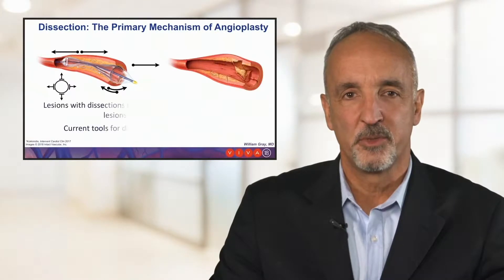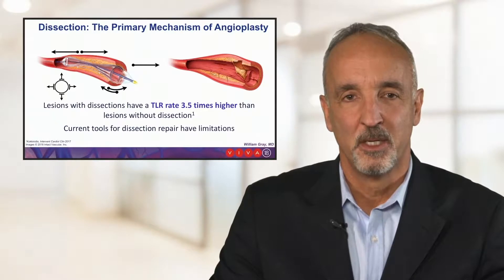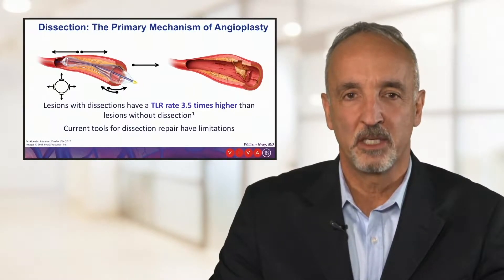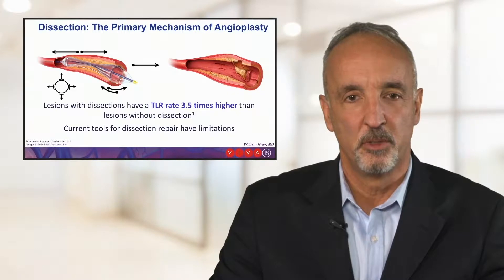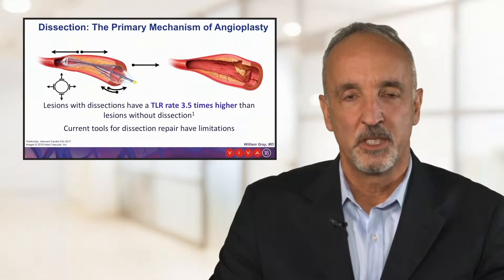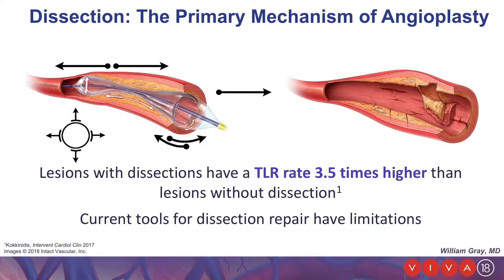Before we get into those results, I think it's important to establish the foundational principle of the trial, which is that dissection is the primary mechanism of angioplasty. When we approach a lesion with a balloon, we see that during balloon inflation, there are torsional and axial forces exerted by the balloon, the net result of which is to improve vessel stenosis, but through the mechanism of dissection.